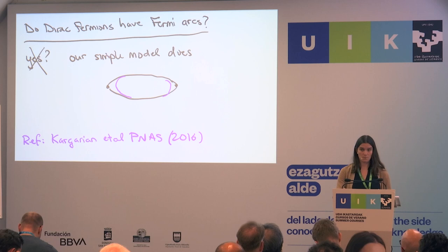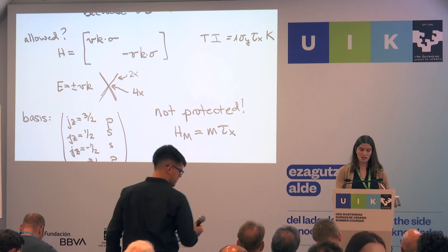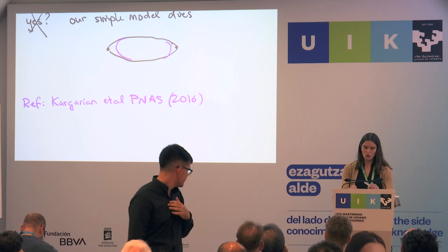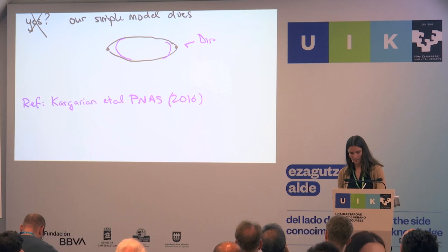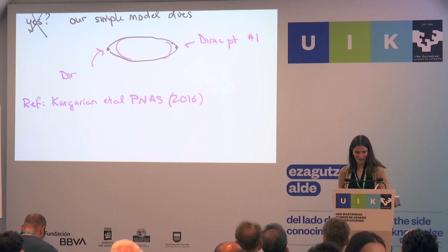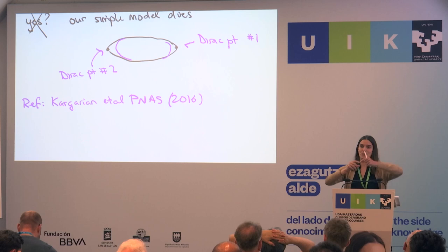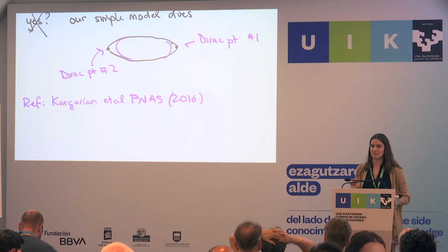Regarding the two Weyl points — they are not only projected to the same point, they're literally at the same K point. This was the Dirac point that we've been talking about, and there's another Dirac point that would be its time-reversed partner. If you have time reversal and inversion, there'll be some other Dirac point, and I'm thinking about Fermi arcs connecting those two Dirac points.